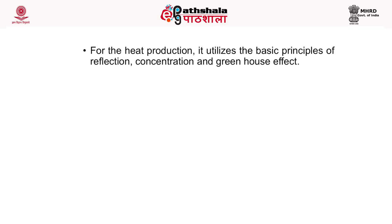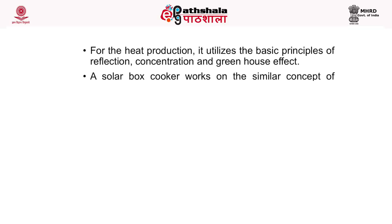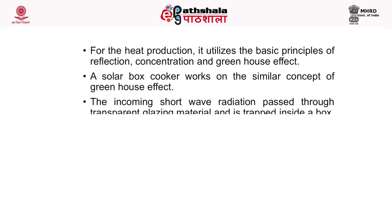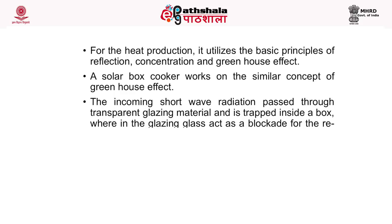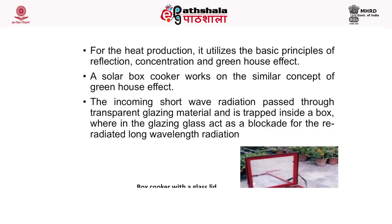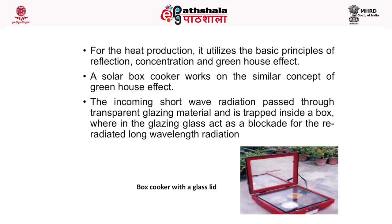The principle of a solar cooker: for heat production, it utilizes the principles of reflection, concentration, and the greenhouse effect. A solar box cooker works on the simple concept of the greenhouse effect. The incoming short-wave radiation passes through a transparent glazing material and is trapped inside a box, where the glazing glass acts as a blockade for the re-radiated long-wavelength radiation. This heat trap can then be used for cooking.